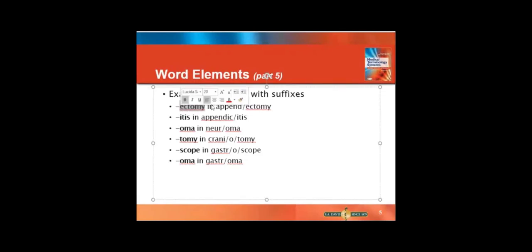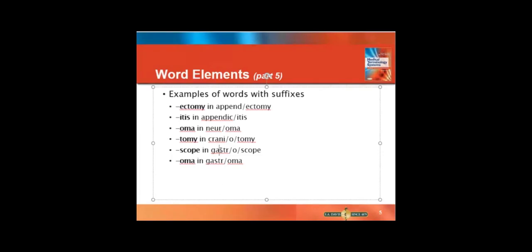Here's some examples of suffixes. We already did ectomy, which is removal. So an appendectomy would be removal of the appendix. Itis is inflammation or infection. So this would be inflammation or infection of the appendix and so on and so forth. I'll let you all continue to go through those as you learn. But trust me, by the end of this course, you would be able to look at gastroscope and instead of seeing one large word, you'd be like, oh, scope is instrument to view. Gastro means stomach, instrument to view the stomach. Think of this as breaking apart puzzle style.